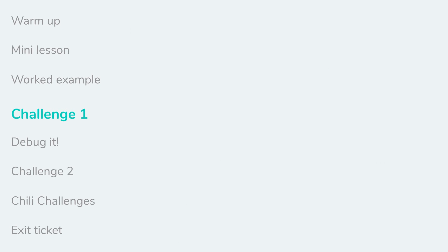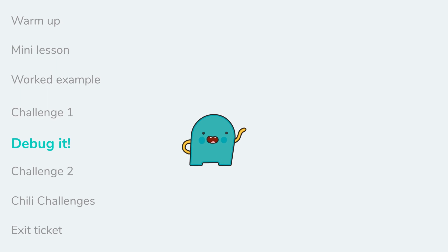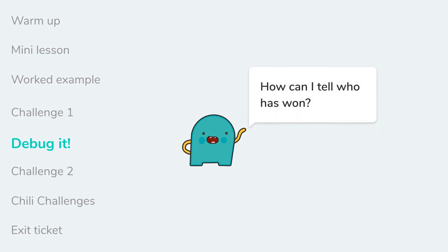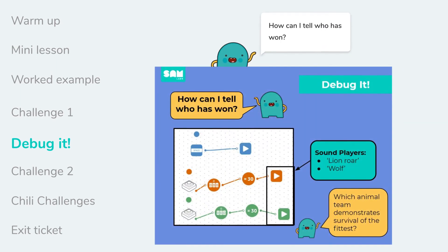The system in challenge one always has an intentional error or inefficiency that needs to be debugged. The purpose of the debug it section is to provide students with the chance to work through their system and the set problem to find a solution or multiple solutions.